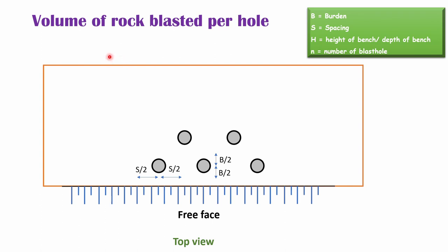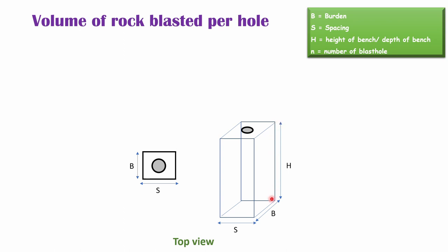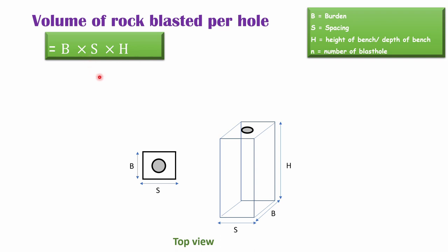Let's see how much rock will be blasted by a single blast hole. For a particular blast hole, it can blast up to half of the spacing on the right side, half of the spacing on the left side, half of the burden on the top side, and half of the burden on the bottom side. So in total, a particular blast hole will blast S spacing and B burden. Since the depth of the bench is H, a particular hole will blast B burden multiplied by S spacing multiplied by H depth. So the volume of rock blasted per hole equals B × S × H.